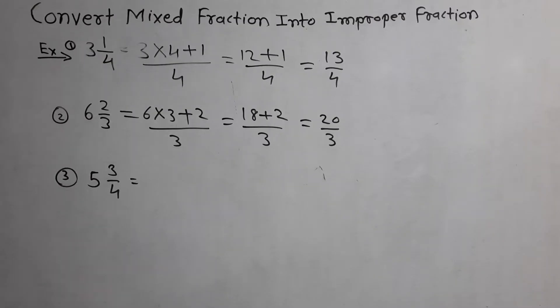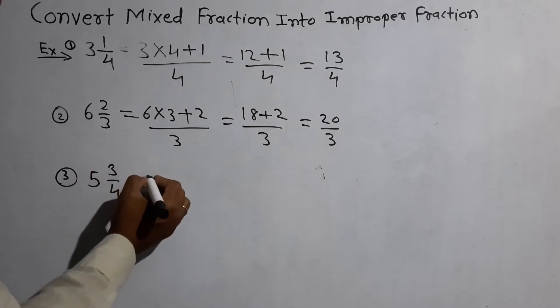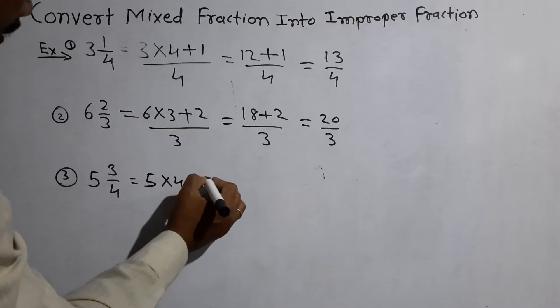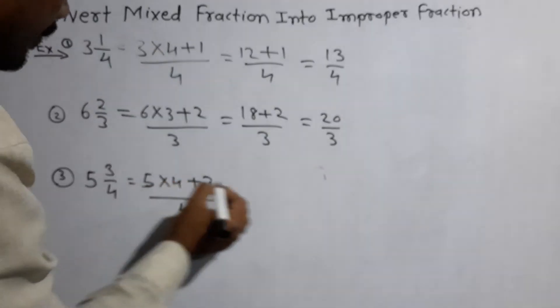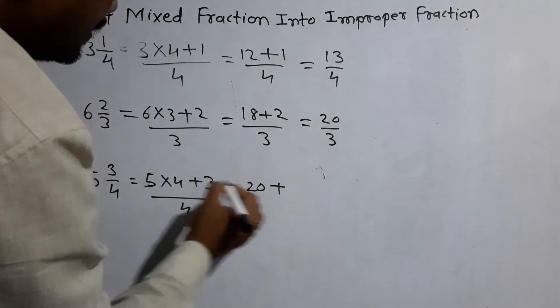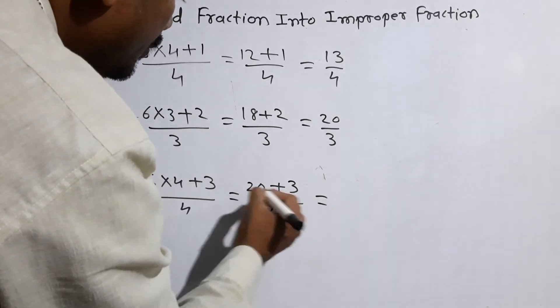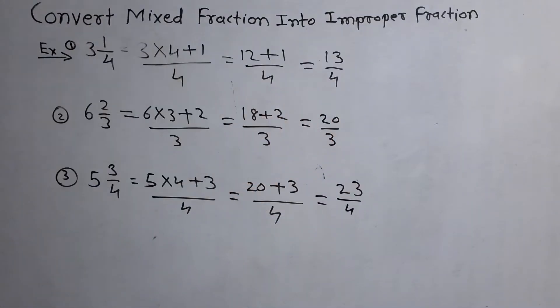Next example is 5 and 3 by 4. First multiply 5 into 4 plus 3 by 4 is equal to 5 fours are 20 plus 3 by 4, which is equal to 23 by 4. This is the improper fraction of 5 and 3 by 4.